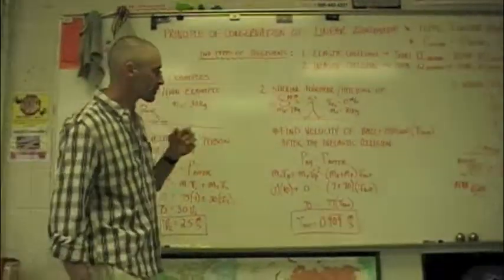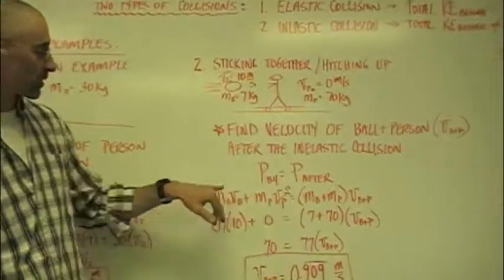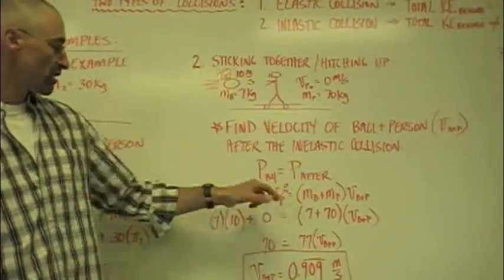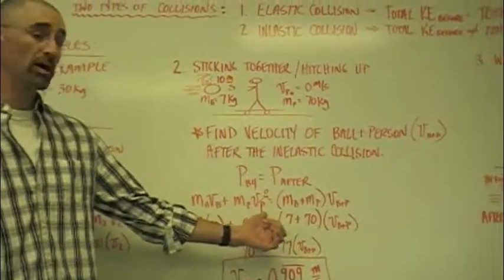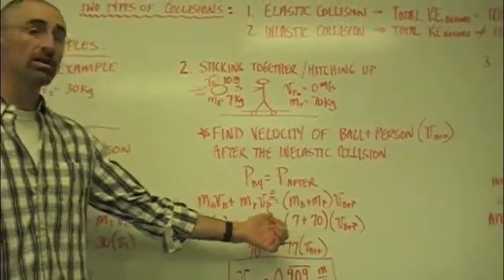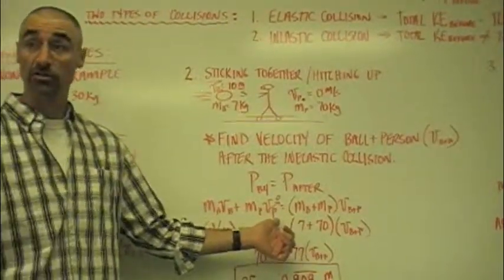So, let's look real quick. And this is pretty important. Sometimes kids get confused with this one. So, momentum before the collision, we have the mass of the ball times the velocity of the ball. The mass of the person times the velocity of the person. Now, before the collision, the person was going, was sitting there going zero, right?